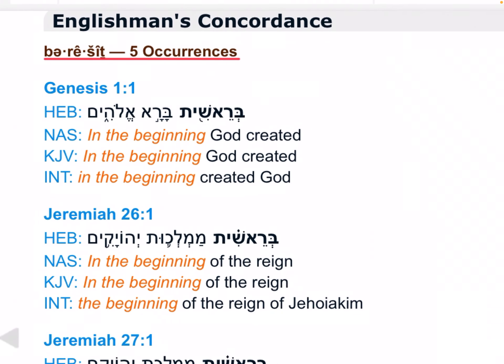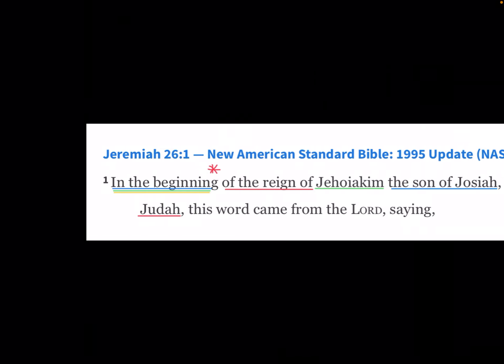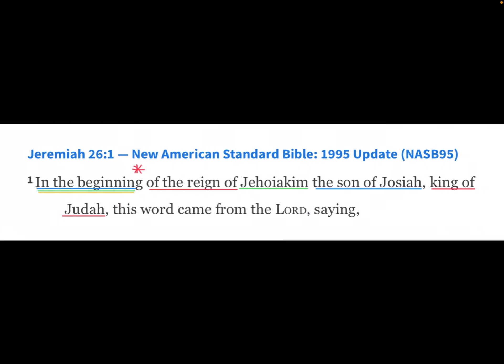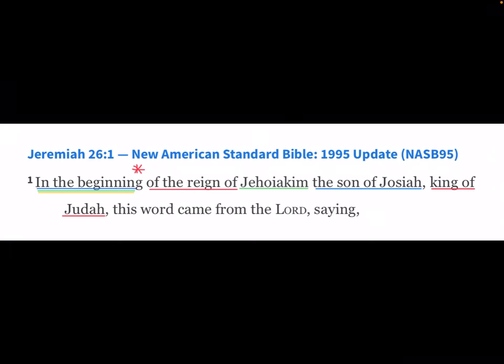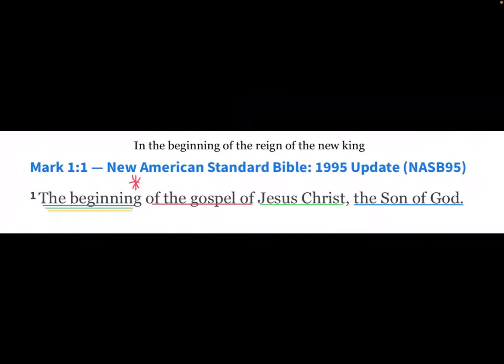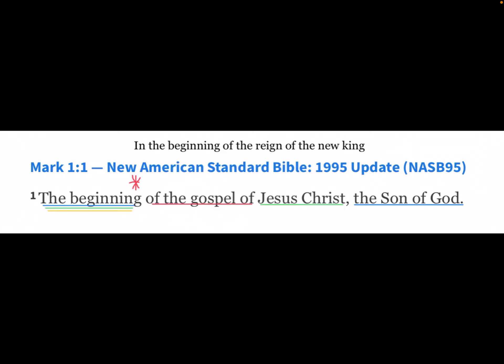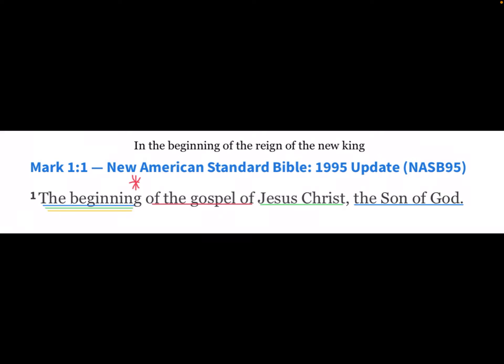So here we have the Barashit — the same as Genesis 1:1 — being used in the Rashit of Nimrod, the beginning of his kingdom. Jeremiah uses the word-for-word usage of Genesis 1:1: 'in the beginning of the reign of Jehoiakim.' So another kingdom reference, which is very important to us, because in Mark 1:1 in the Greek we have 'Archei' — the beginning of the gospel of Jesus Christ, the Son of God.